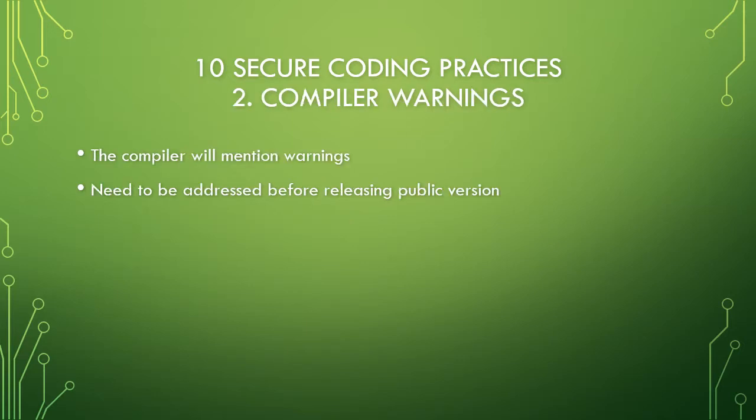The second one is compiler warnings. This one is simple. Your compiler is there to throw everything together. It's going to show you the warnings and the errors. Not all of these will stop your program dead in its tracks — a lot of them can be ignored — but they really shouldn't be. The compiler is going to give you ways to plan for attacks or errors that would happen.